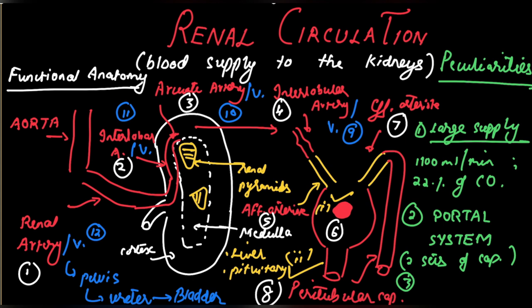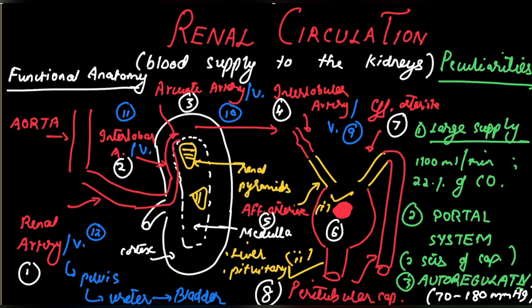Third, renal blood flow is auto-regulated — that is, it is maintained constant within reasonable limits within a blood pressure range of 70 to 180 mmHg. Fourth, sodium consumption drives blood flow, rather than blood flow driving sodium consumption.